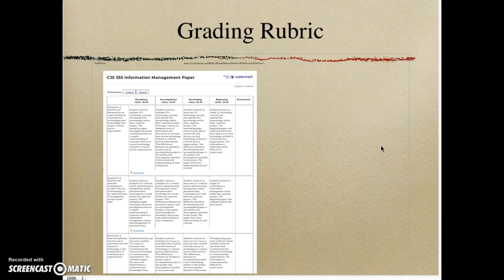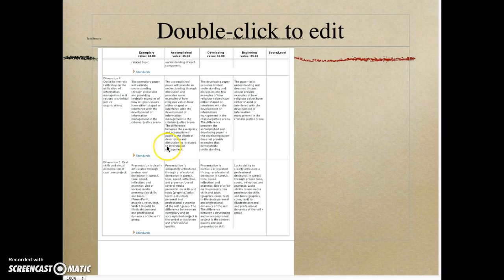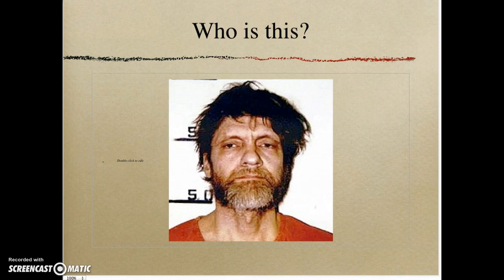Those are things you really need to look at as you develop your final paper. Take a look at the grading rubric — this is page one and this is page two. When you look at what role faith plays, you can read what is required for the exemplary rating, so as you prepare that dimension of your paper you can make sure you fulfill those requirements for an exemplary rating. The same thing applies for your oral skills and visual presentation — take a look at that so you know basically what is required as you develop your final paper.